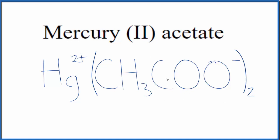So this is the formula for mercury(II) acetate. Note with the acetate ion we have CH₃COO in the brackets. Sometimes you'll see this as C₂H₃O₂ in the brackets instead. This is just another way you could write it.